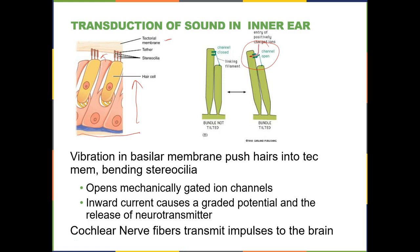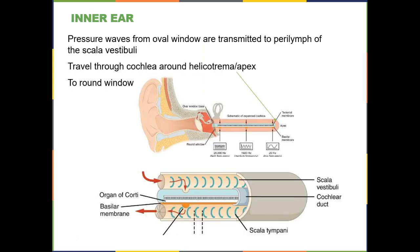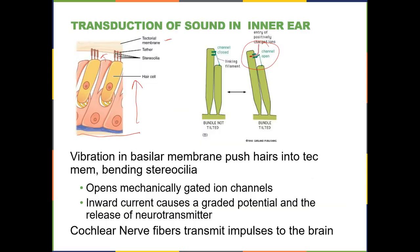The basilar membrane gets pushed up, the hairs get pushed into the tectorial membrane, causing the hair cells to bend. When the hairs bend, that opens a channel allowing an ion like sodium to rush in and depolarize the cell. The second open-ended question you might be asked is how does transduction work, or how does your inner ear work: oval window transmits vibrations to the perilymph, perilymph causes the basilar membrane to move, which pushes hair cells up into the tectorial membrane, causing channels to open and ions to flow in.